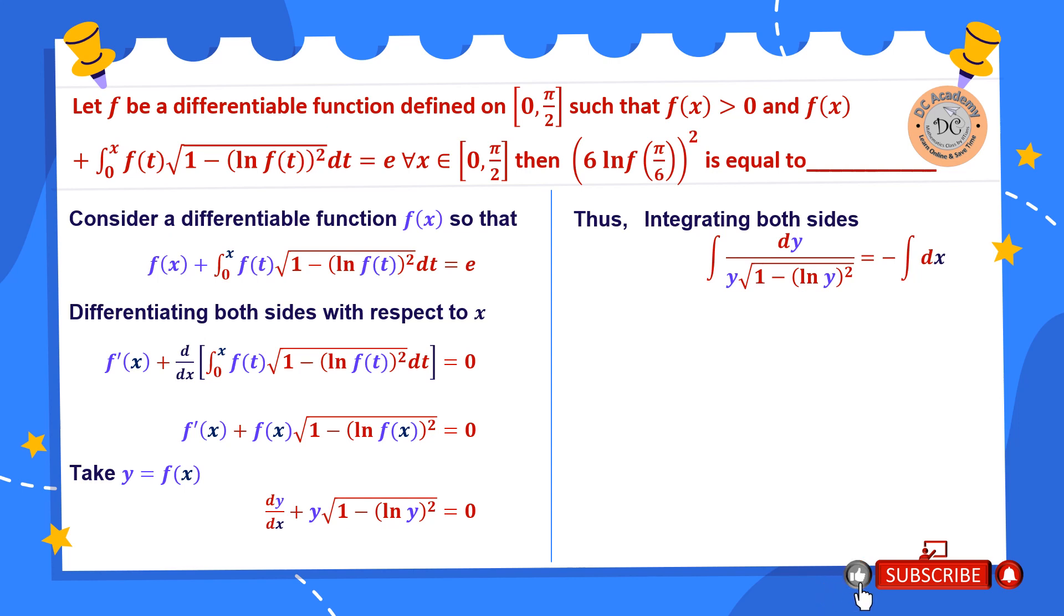Now to solve this integration we consider, especially for the left hand side, ln y = z. So therefore dz will be (1/y)dy. So if I use this substitution, our integration dy/y will be transformed by dz and the other stuff will be 1 - z². So therefore we get dz/√(1 - z²) = -dx. Now it is obvious that the integration on the left hand side is actually equal to sin⁻¹(z).